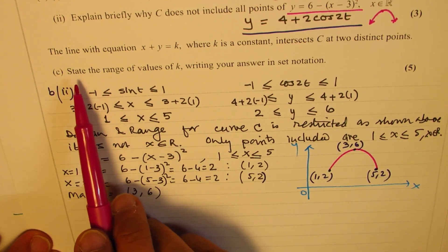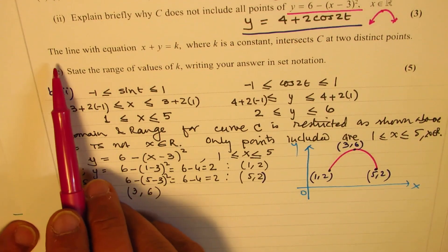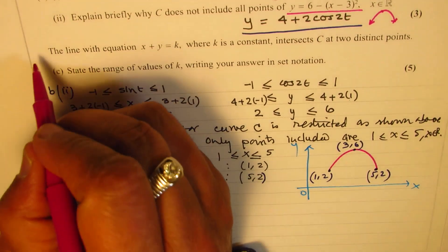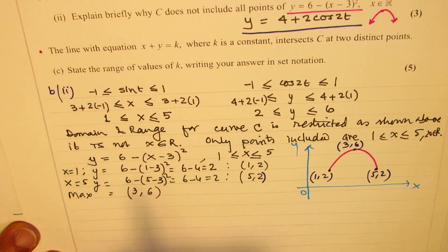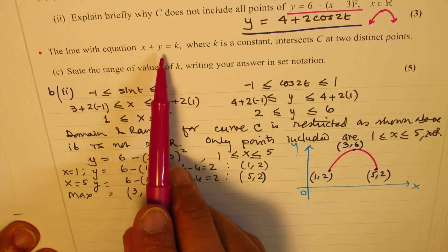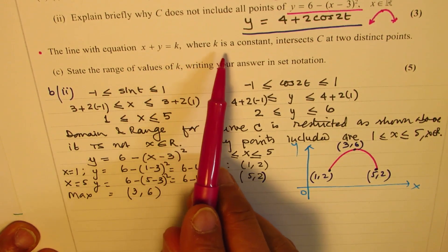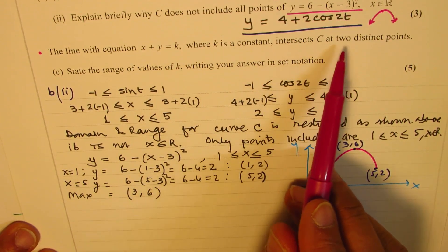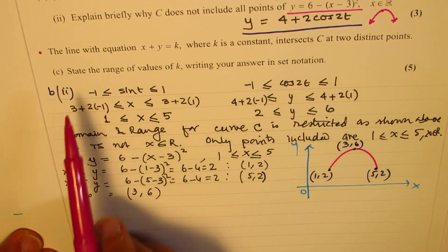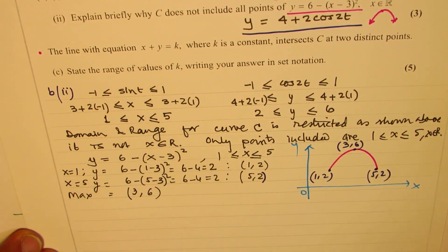Now we have another part to this question: the line with equation x plus y equals k, where k is a constant, intersects C at two distinct points. We need to state the range of values of k.